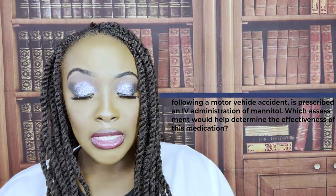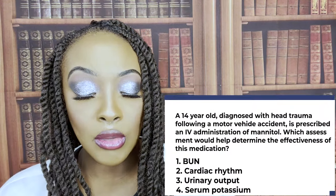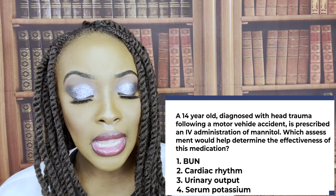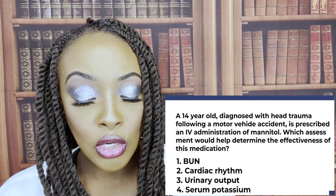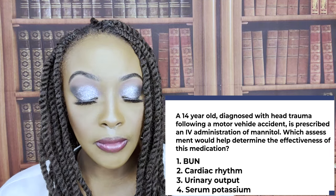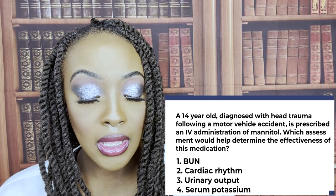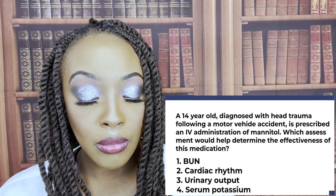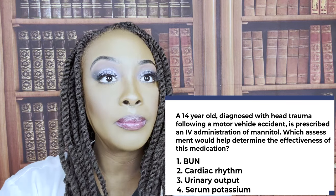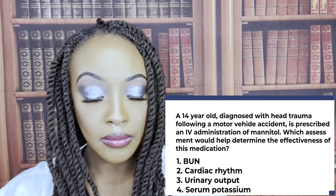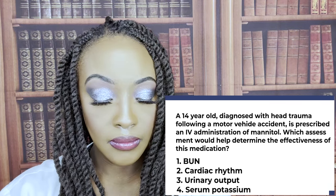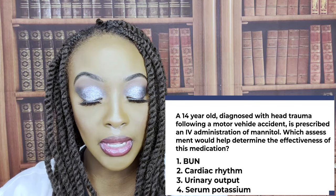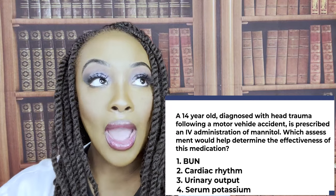A 14-year-old diagnosed with head trauma following an MVA is prescribed IV administration of mannitol. Which assessment would help determine the effectiveness of the medication? One: BUN. Two: cardiac rhythm. Three: urinary output. Or four: serum potassium. The correct answer is three — urinary output.